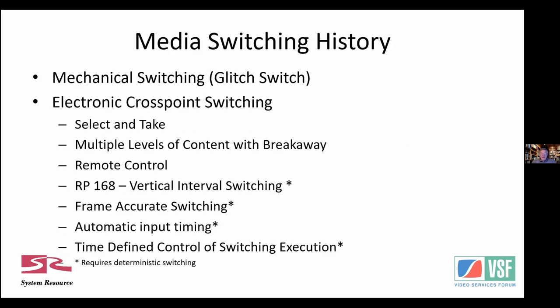A little history: I'm going to relate the IP switch to a routing switcher in old terms from a functional point of view. In the old days we had the glitch switch, where you press a button and there's a mechanical function switching from one source to another. Then electronic crosspoint switching started, so we could preview a function and press a take button to effect the change at a specific time. Then we had multiple levels of content - multiple streams connected - so you could select a video and one audio and leave other audios out, grouping different levels of content together in a flow.